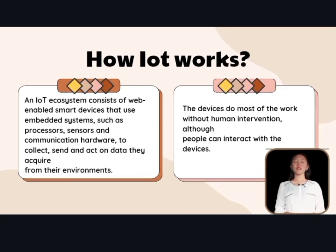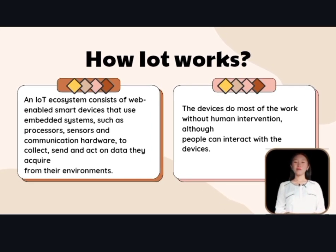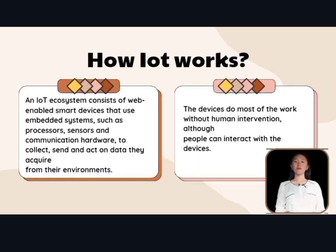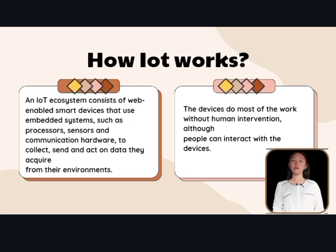How IoT works: an IoT ecosystem consists of enabled smart devices that use embedded systems such as processors, sensors, and communication hardware to collect, send, and act on data they acquire from their environments. The devices do most of the work without human intervention, although people can also interact with the devices.